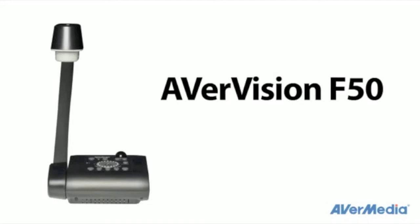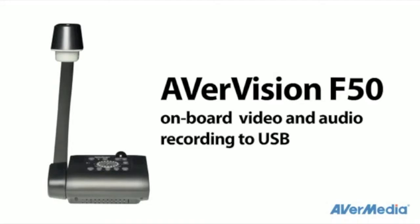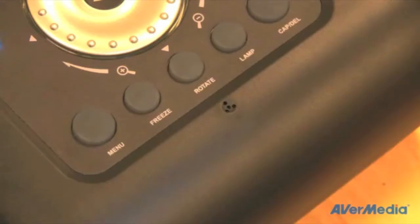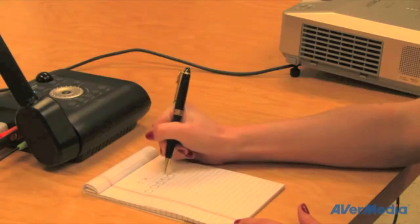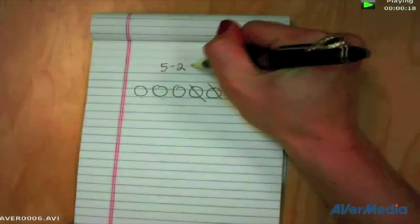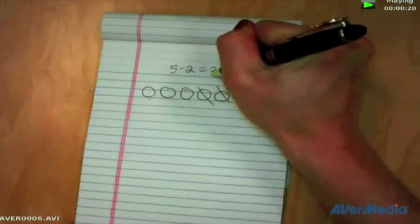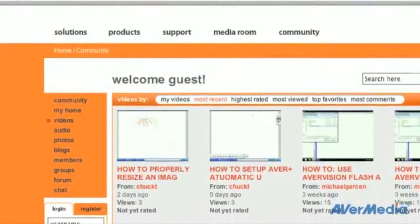The F50 is also the first flexible arm doc cam from AverMedia with onboard video and audio recording to USB. With the built-in microphone that records superior audio, it's easy to capture videos of your lessons and share them with absent students, post them on the web, or save them for future reference.